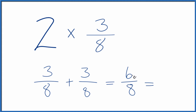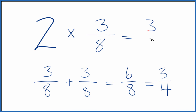6 divided by 2 is 3, and 8 divided by 2 is 4. So we can simplify 6 eighths down to 3 fourths. So in answer to our question, 2 times 3 eighths equals 3 fourths.